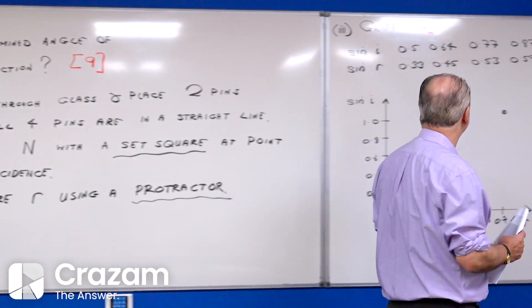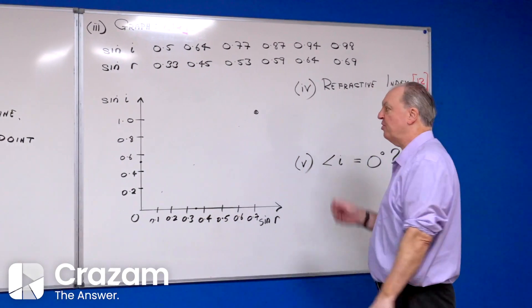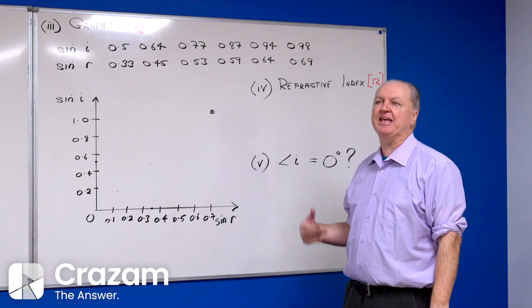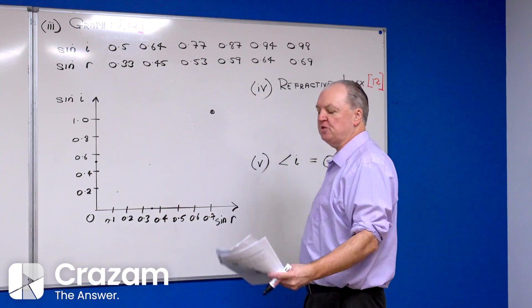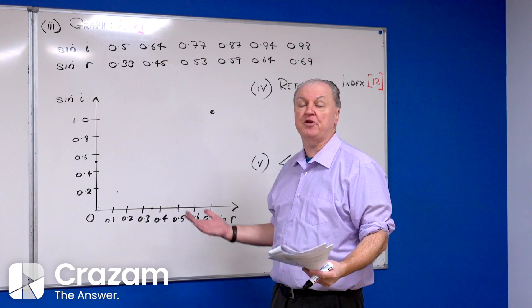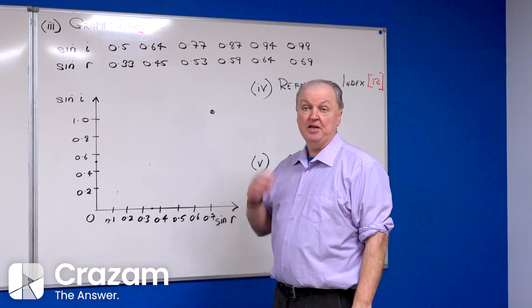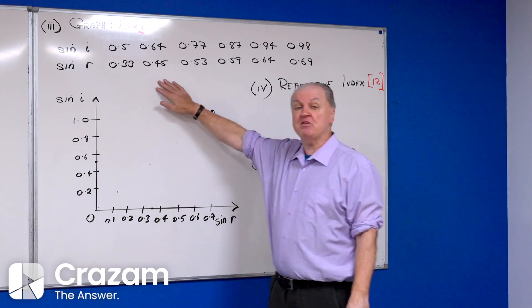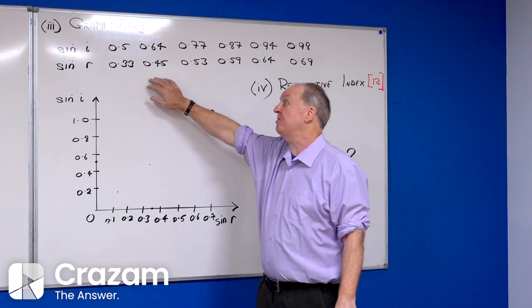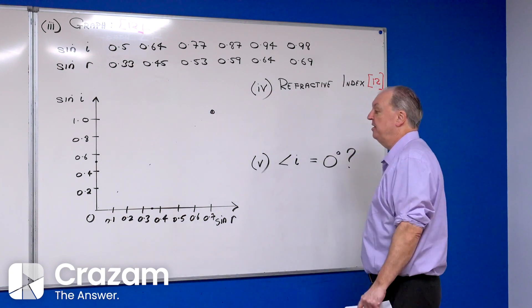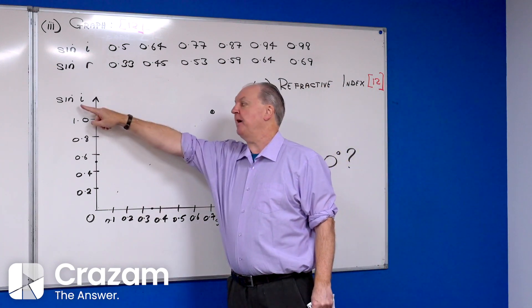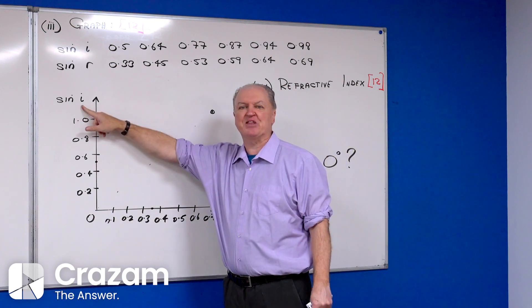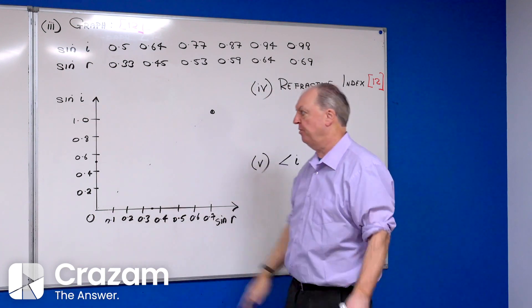They're asking me to draw a suitable graph. Everyone knows a suitable graph when we're talking about Snell's law is sine i against sine r. They give you the angles, 30 degrees, 40 degrees, 50 degrees, so you've got to work out the sine of the angles. Two decimal places for all your values of sine i and sine r. I'm going to put sine i here, sine r down here.